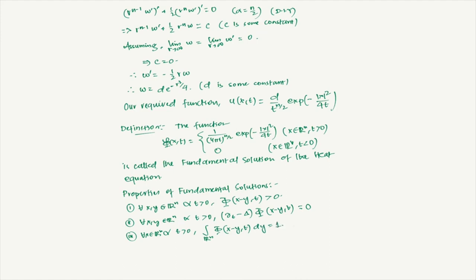Property 3: For all x in R^N and t > 0, the integral over R^N of φ(x−y, t) dy = 1. The reason we took D = 1/(4π)^(N/2) was precisely to make this integral equal to 1.